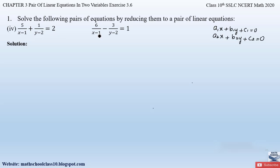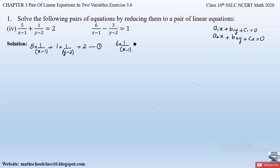To bring them into the general form of a pair of linear equations, we can write the first equation as 5 × (1/(x−1)) + 1 × (1/(y−2)) = 2. Here we are splitting the numerator and the denominator. Let this be equation number 1. Similarly, from the second equation we split and write 6 × (1/(x−1)) − 3 × (1/(y−2)) = 1. Let us take this as equation number 2.